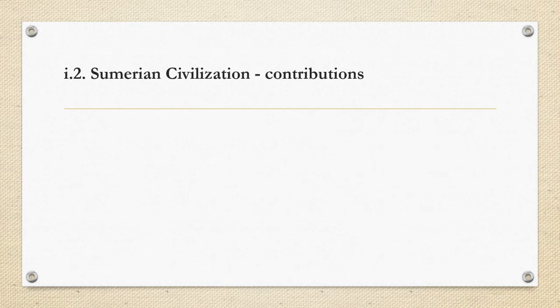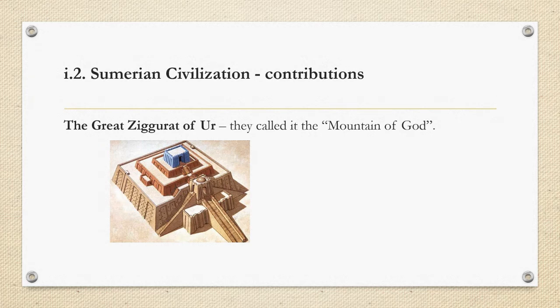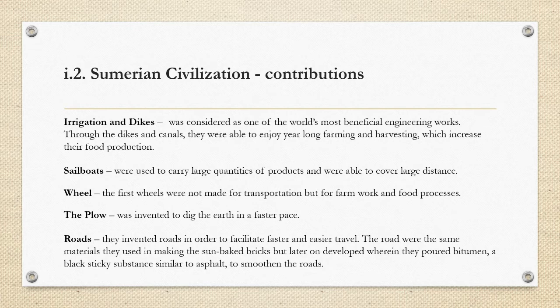Another contribution of the Sumerian civilization was the great ziggurat of Ur — they called it the 'mountain of God.' The Sumerians were also considered among the world's most beneficial engineering works through their construction of dikes and canals. Through these irrigations, they were able to enjoy year-long farming, which greatly increased their food production.